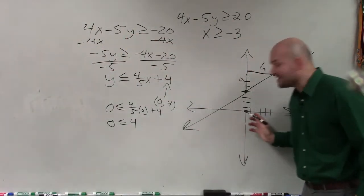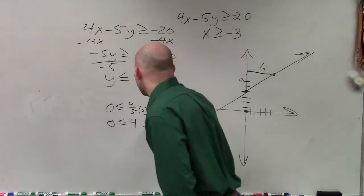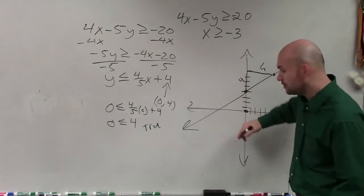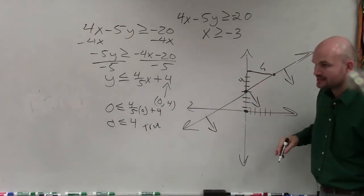Now, in this case, you can see my test point is going to be true. So therefore, now I want to shade towards where it's true. Where in the last example, it was false, so I shaded away. Now I'm going to shade towards it.